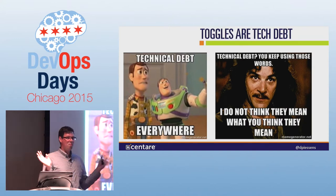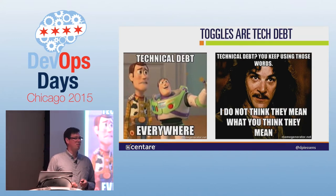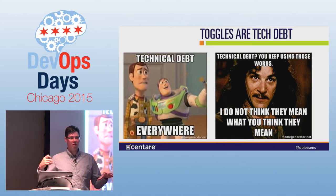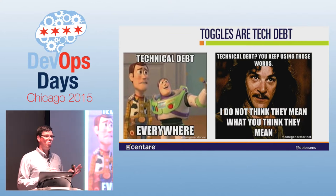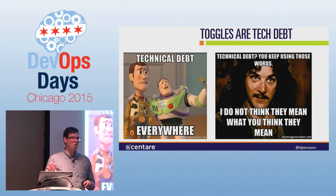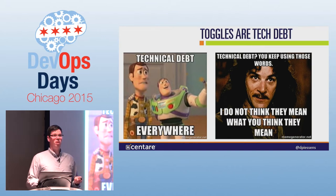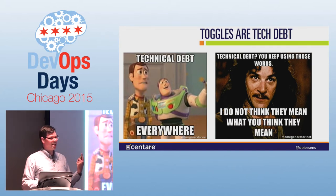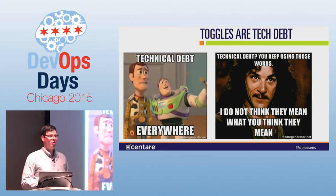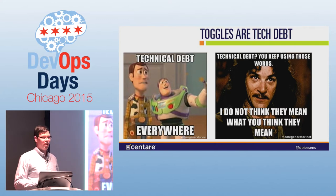Toggles are absolutely technical debt. When you put toggles into code, you're making a decision to leave both the old code and the new code in your application. People don't want to accept this — they just keep adding toggles, and it ends up looking like the flip-switch panel of a 747 dashboard where they don't know what turns on or off or what's dependent on what. You end up with all these permutations and combinations that can really be a problem.